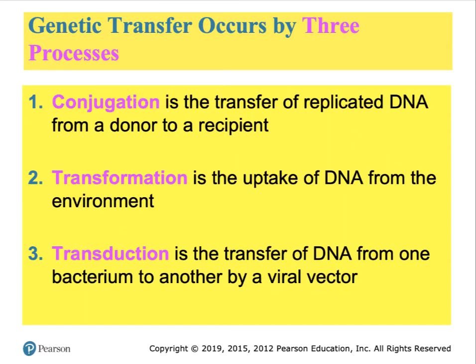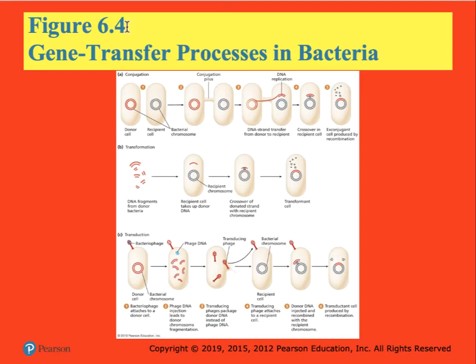Please remember all three processes. Figure 6.4 attempts to relay the same information in a graphical format. We have conjugation in the top row, transformation in the middle row, and transduction in the bottom row. The donor chromosome is in red and the recipient cell's DNA is in blue. Study these figures carefully.